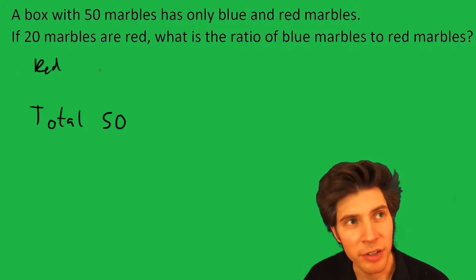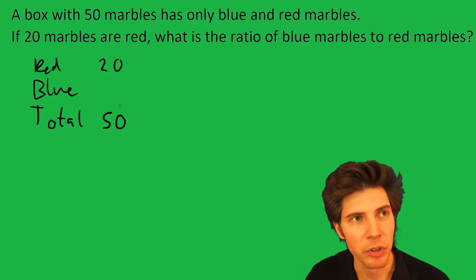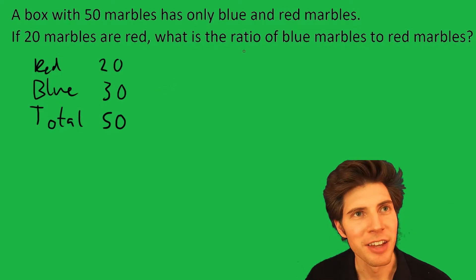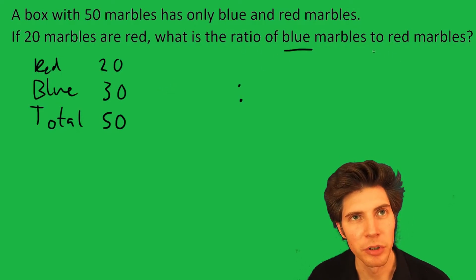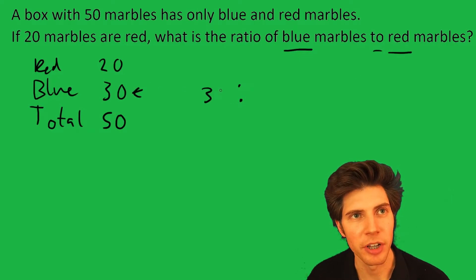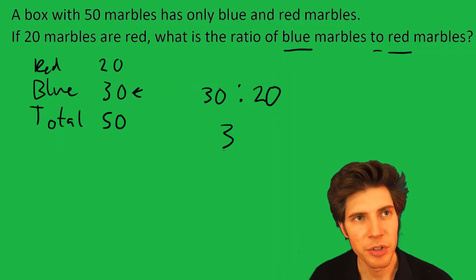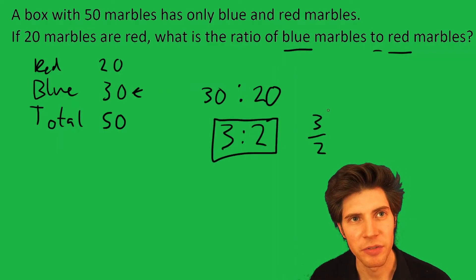So how many does that leave for blue? That's going to be 30. Then we do a ratio of blue to red — blue is 30 to red of 20 — and this can be reduced down to 3 to 2.